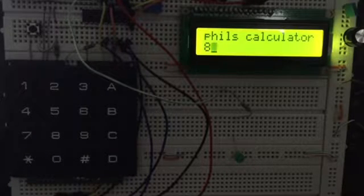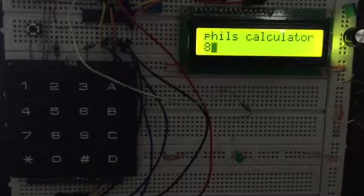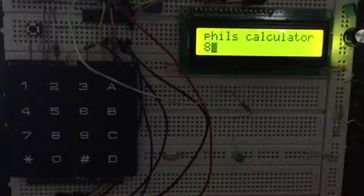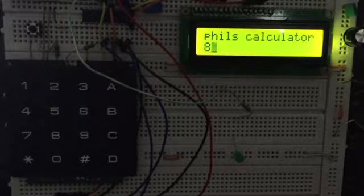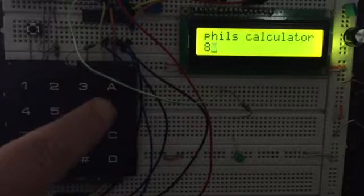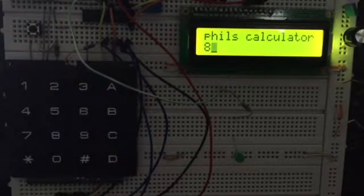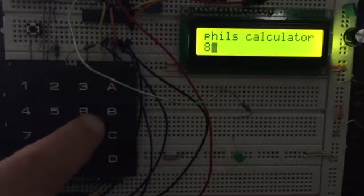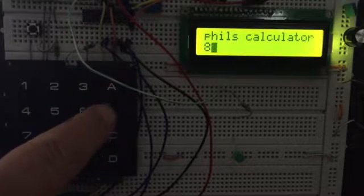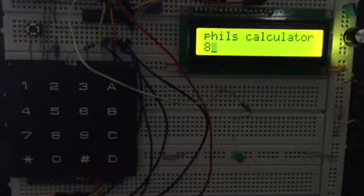Then we need to enter an arithmetic operator, in other words plus, minus, multiply or divide. I've put those functions on the A, B, C and D keys here, so we've got plus is A, minus is B, multiply is C and D is divide.